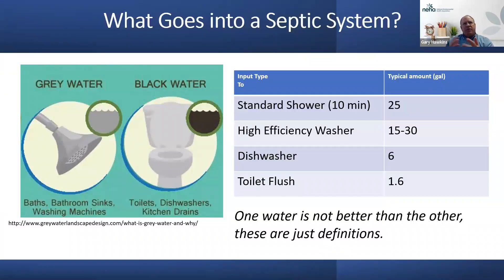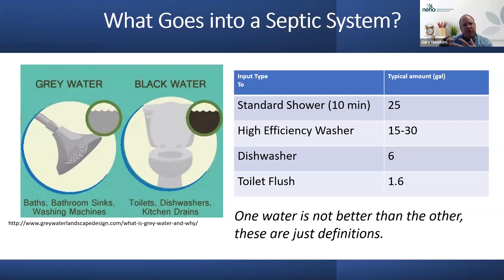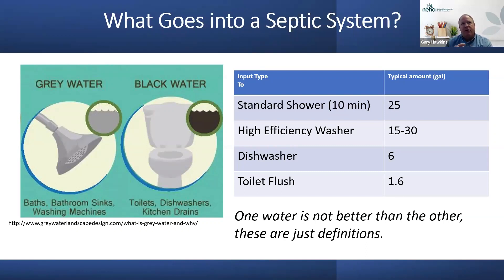Gray water versus black water: gray water is bath and bathroom sink water, washing machine water — things that typically don't have organic matter associated with them. Black water, on the other hand, includes toilets, which obviously have organic matter, dishwashers with food scraps, and kitchen drains. When looking at septic system issues or failures, we go back and look at typical water usage amounts in the household to see if water usage is out of proportion, which can indicate overloading the tank.